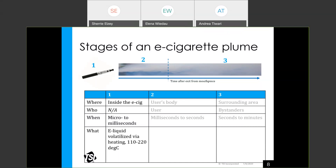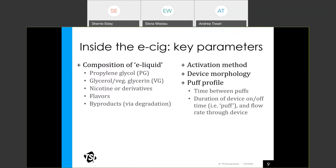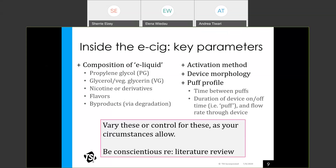In stage one, the e-liquid is volatilized by heating in the device, usually to around 100 to 200 degrees Celsius. Inside the e-cigarette, the liquid is composed of propylene glycol, glycerol or glycerin, nicotine and other derivatives, flavors, and may have some byproducts. Other relevant parameters include the activation method, the device morphology, and the puff profile. These are parameters a researcher may want to vary or control depending on the research question, and it's important to be aware of all of them when doing a literature review and comparing data sets.